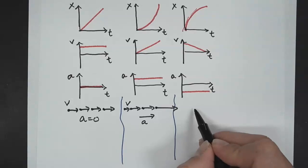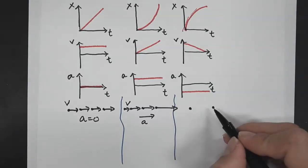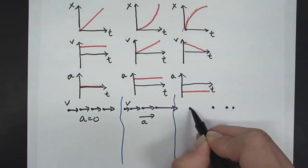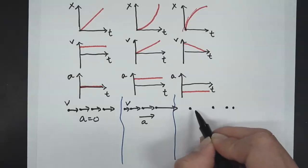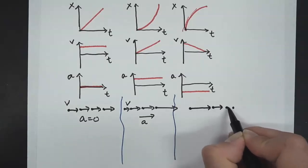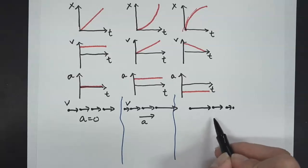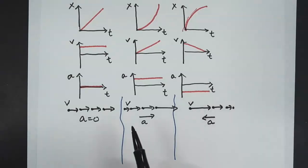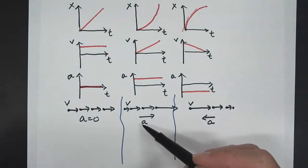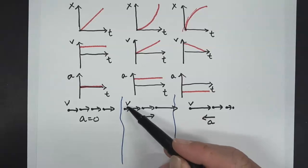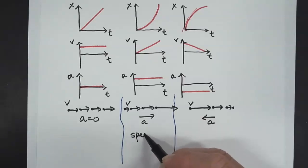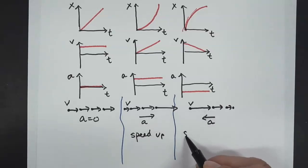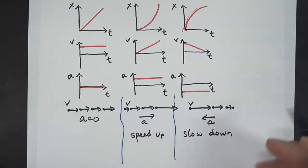Now let's say the car is slowing down. When it's slowing down, the dots are going to get closer and closer together. I'll draw in the arrows so you know what direction it's moving. The acceleration here will be to the left. When an object's acceleration is in the same direction as the velocity, it speeds up. When the acceleration is in the opposite direction of the velocity, it slows down.